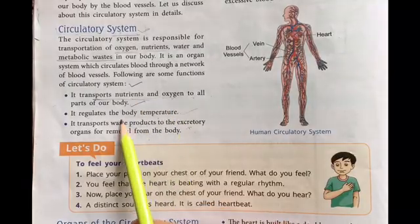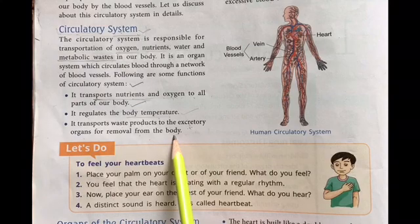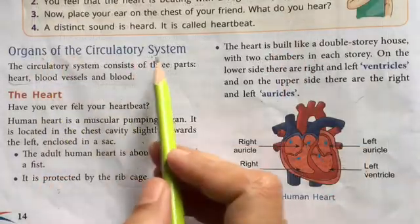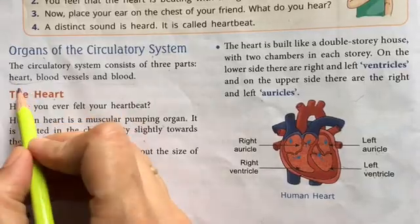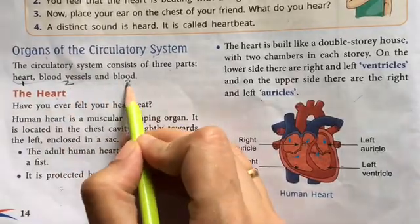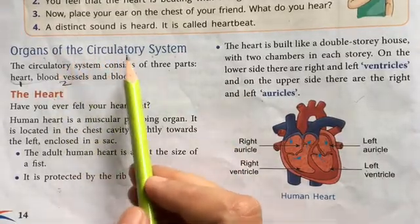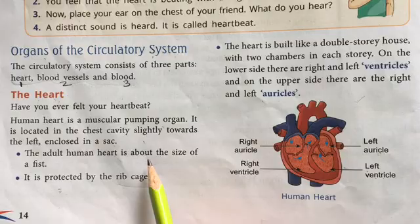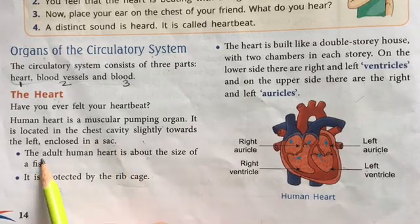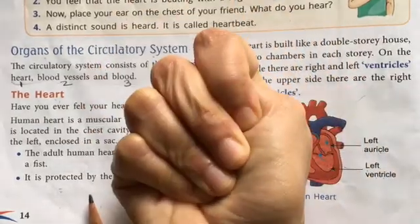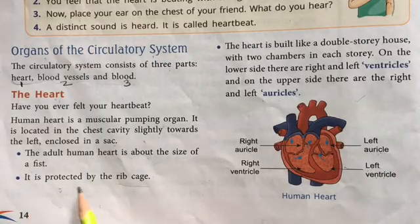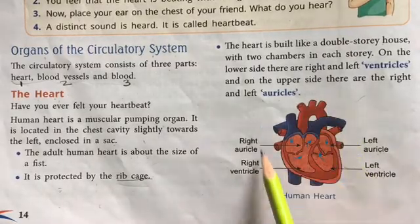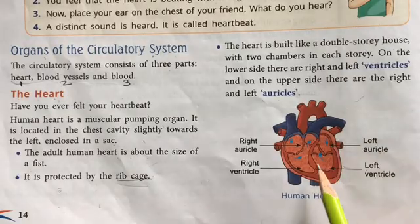So carrying nutrients, maintaining body temperature, and excretion of toxins — these are the functions of the circulatory system. The organs of the circulatory system are: one is the heart, two is blood vessels, and three is blood. The heart is located on the upper left side of our chest. The adult heart is about the size of a fist. It is protected by the rib cage, which prevents any damage to the heart.